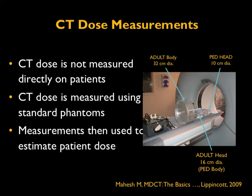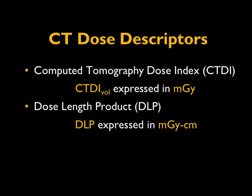CT dose is measured using standardized phantoms, and those measurements are used to estimate CT patient dose. The main CT dose descriptors are the CT dose index — CTDI vol — expressed in milligray, and the dose length product, also known as DLP, expressed in milligray centimeter.